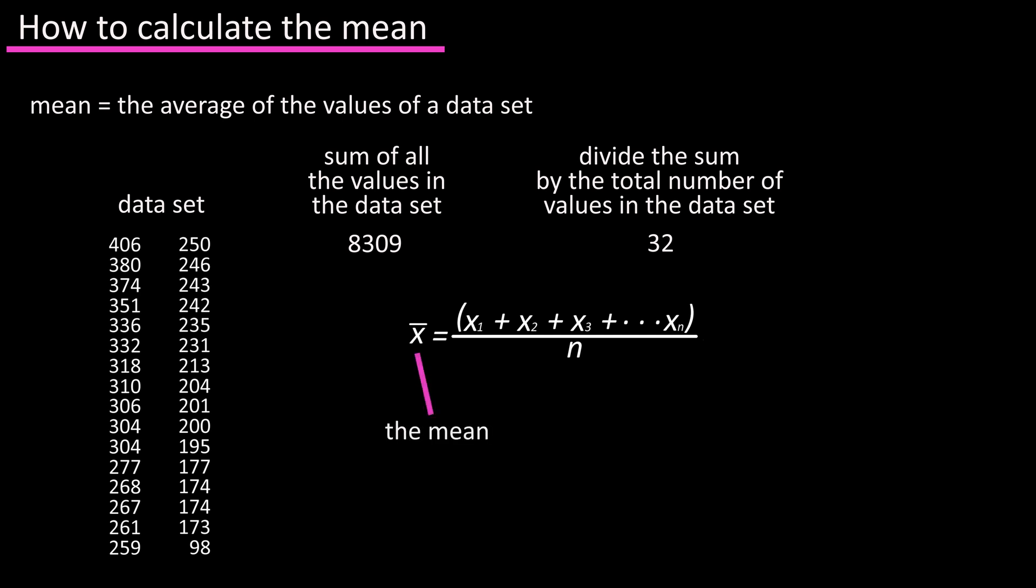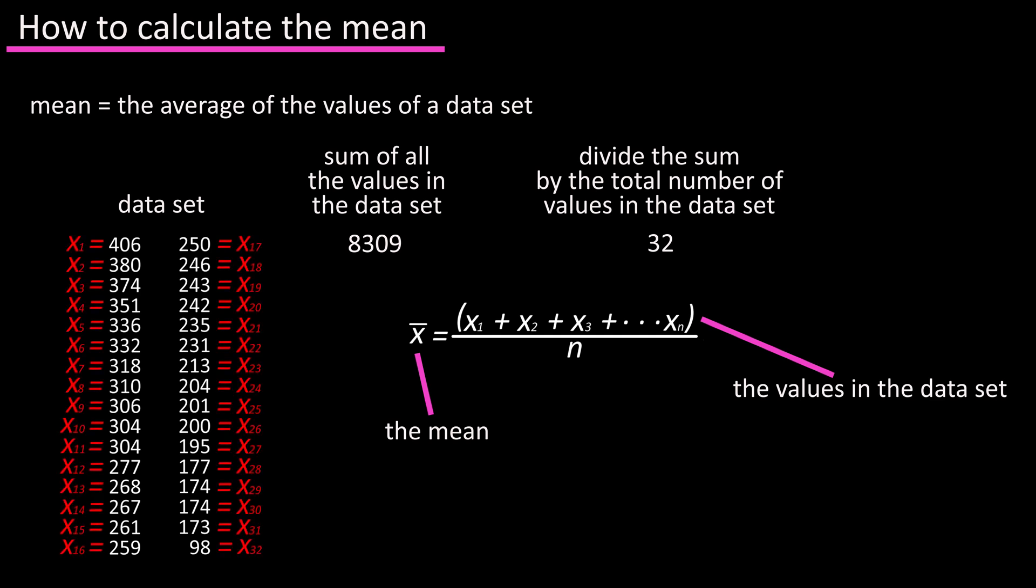In this equation, x bar represents the mean or average. x1, x2, x3, all the way to xn, represents the values in the data set. As you see here, with xn being x32, the last value in the data set, and n, in both cases, represents the total number of values in the data set.